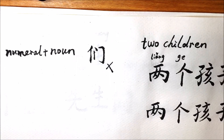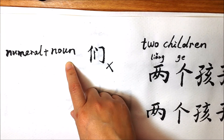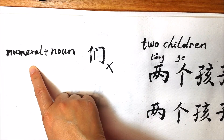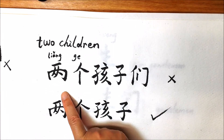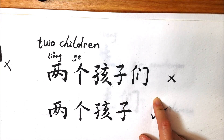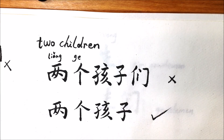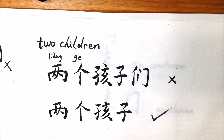But please notice that 们 is not to be used after a noun that has a numeral modifier. For example, 'two children' — is that 两个孩子们? No, that's not right. The correct translation is 两个孩子. That's all for today. I will see you soon. Thanks for watching.